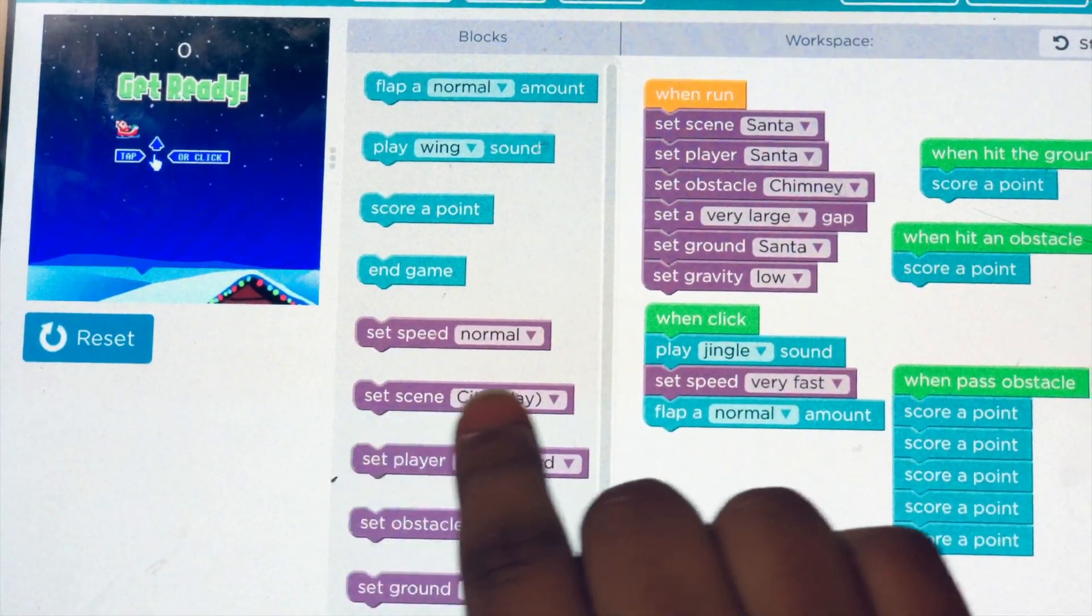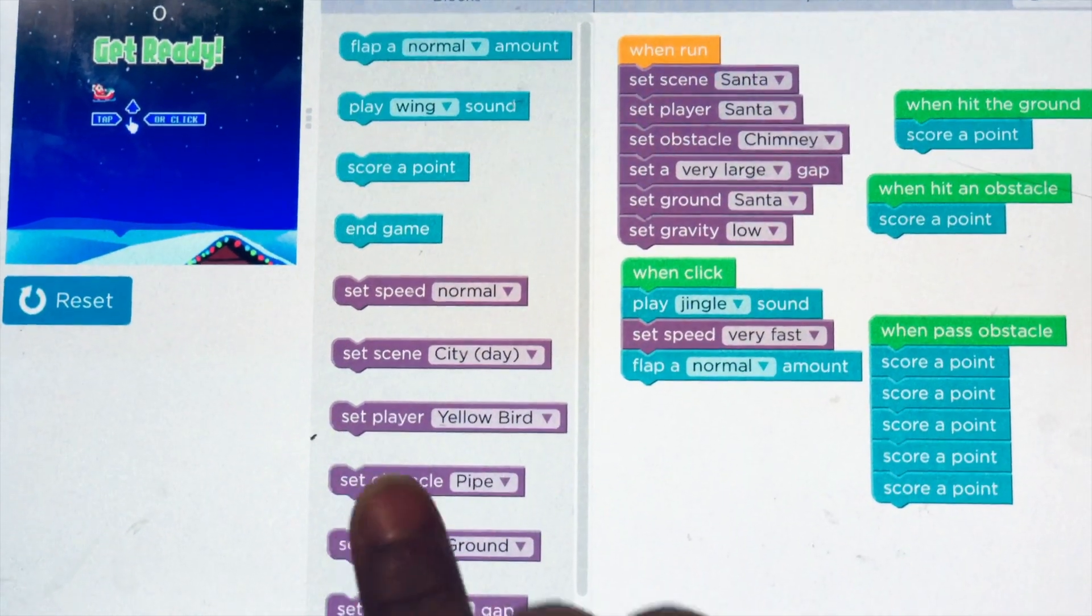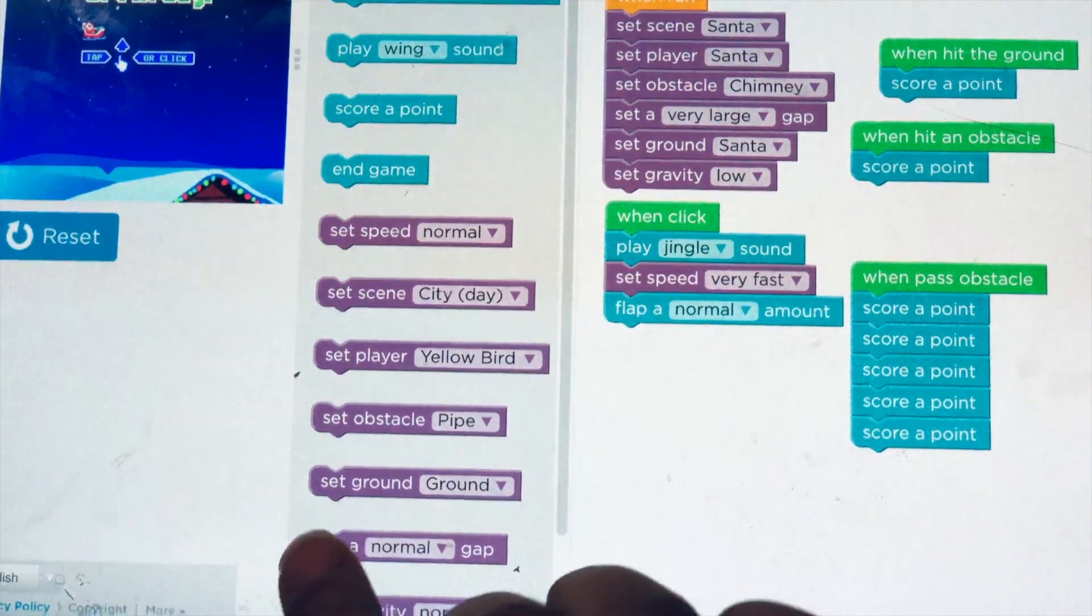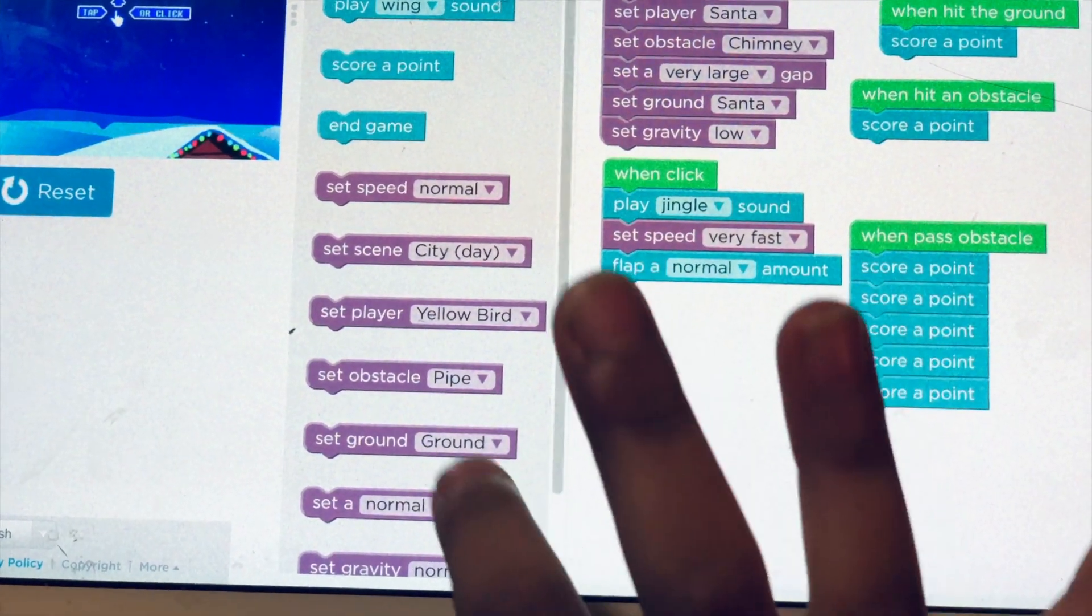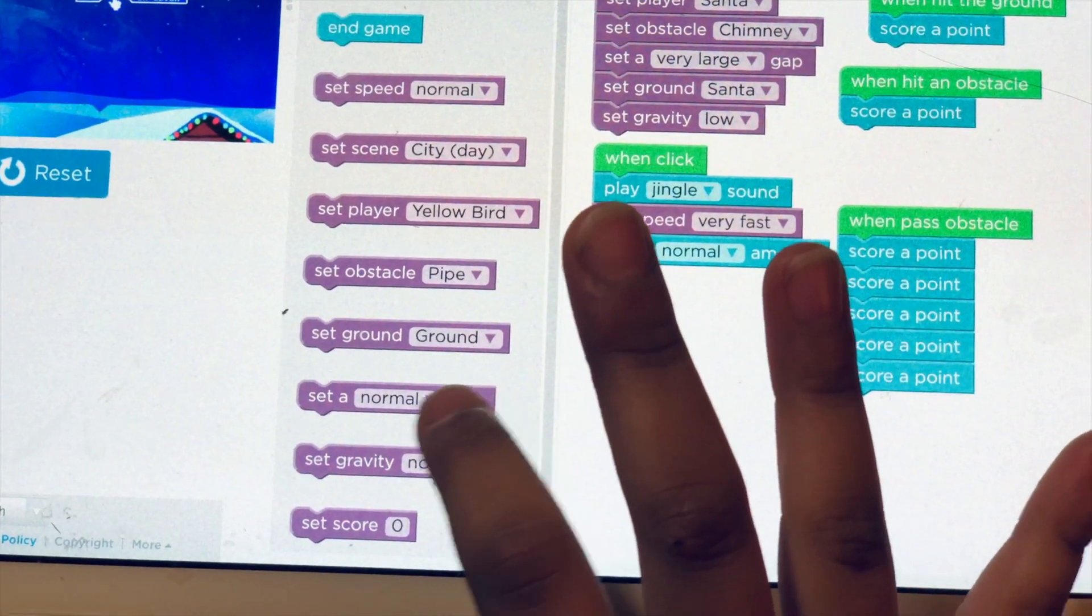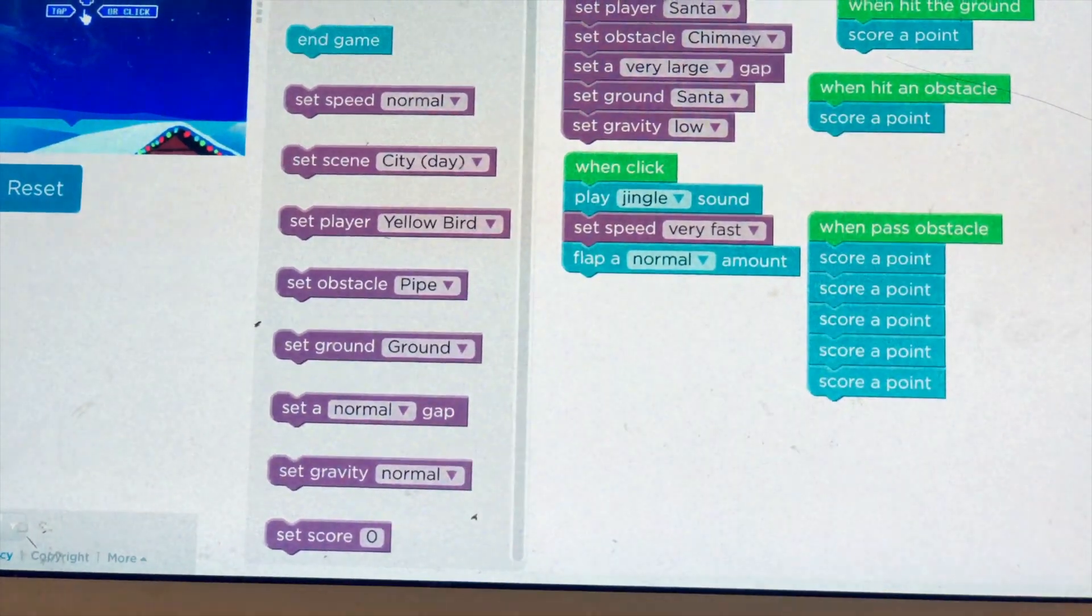This is to set the background. This one's to set the player. This is to set the obstacle and what the ground looks like. You can also change the size of the gap in the obstacles and you can set the gravity any way you like.